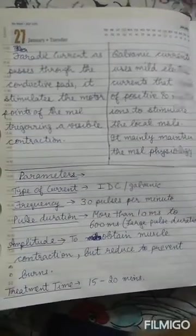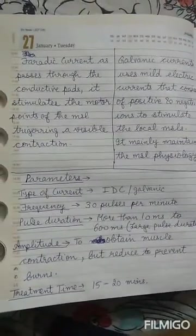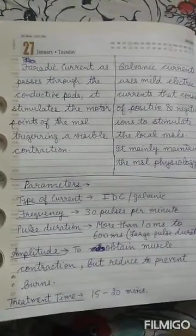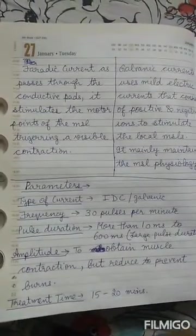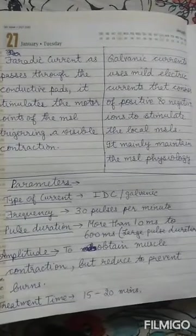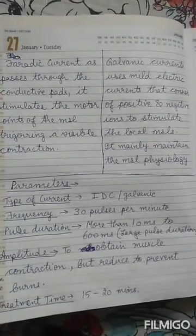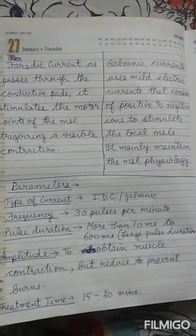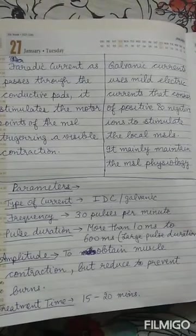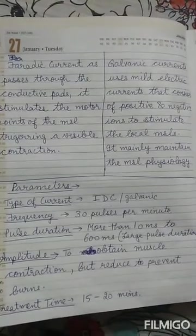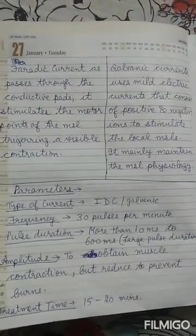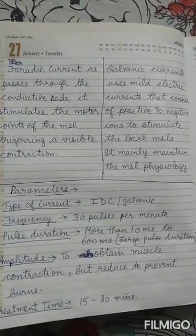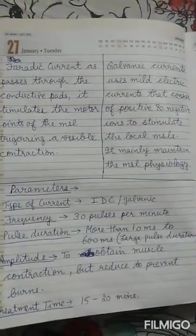Faradic current, when passed through conductive paths, stimulates the motor points of the muscle and can trigger a visible contraction. Galvanic current uses mild electric currents consisting of positive and negative ions, which stimulate the local muscles. Mainly, galvanic current is used to maintain the muscle physiology.